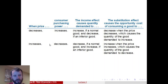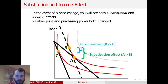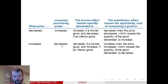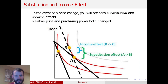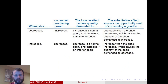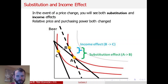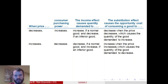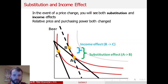So that's the corollary — when a price increases, consumer purchasing power decreases, which we can see because we're consuming at a lower indifference curve. The income effect causes quantity demanded to decrease as long as the good is normal — that's represented by the drop from B to C. The substitution effect causes the quantity of the good whose price increased to decrease, while the quantity of the other good increases.